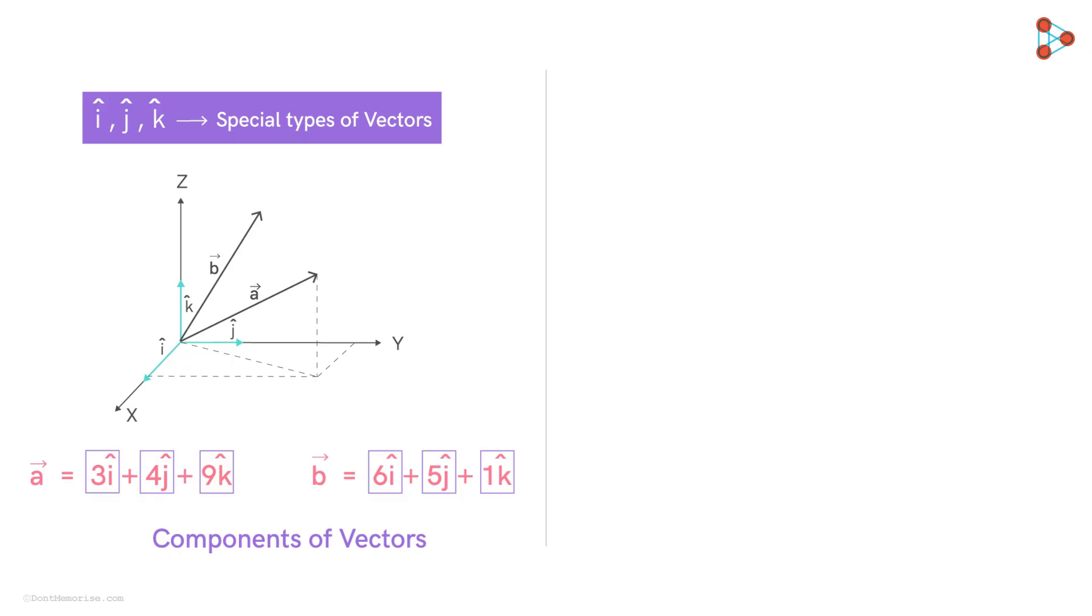It makes dealing with vectors a lot easier. For example, suppose we want to add these vectors. Then we will see that to get the resultant vector, we just have to add the components of the vectors like this. Interesting right? These components make the addition of vectors as simple as adding numbers. This was just a glimpse of the whole idea to show you the bigger picture.